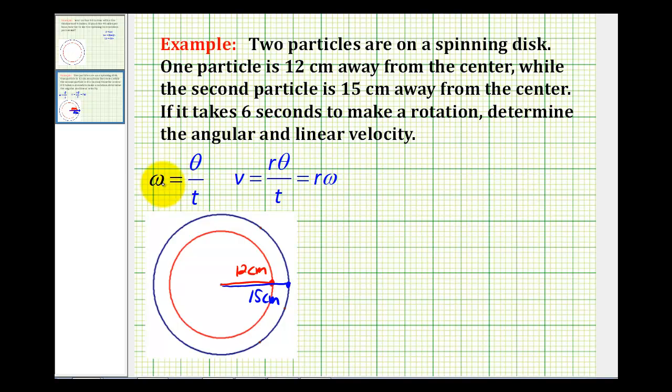Omega, or angular velocity, is equal to theta divided by t. Notice that this formula does not involve the radius, and therefore the angular velocity is going to be the same for both of these particles.